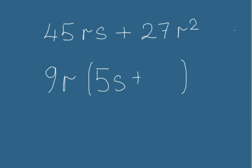Okay, have a quick double check when you get to this stage. So 9r by 5s will give you 45rs, perfect. And 9r by 3r will give you 27r squared.